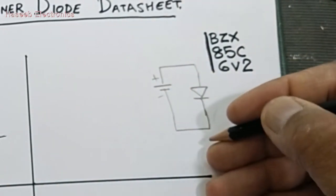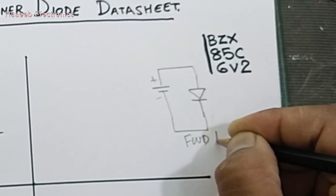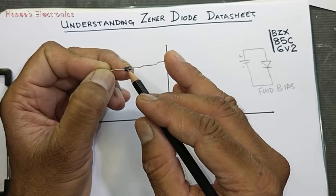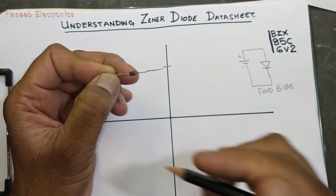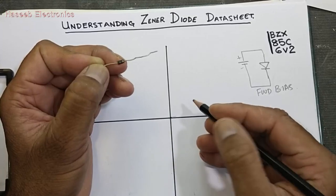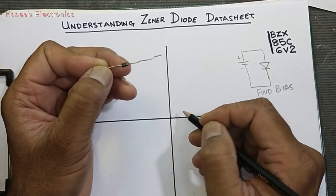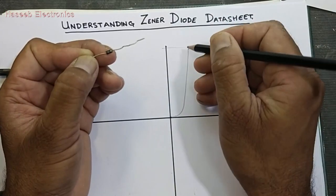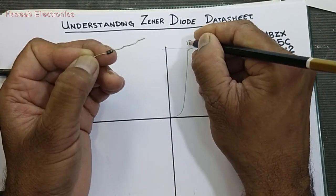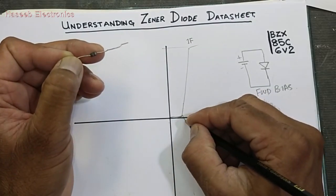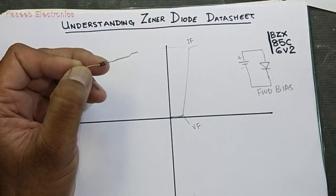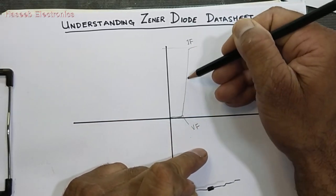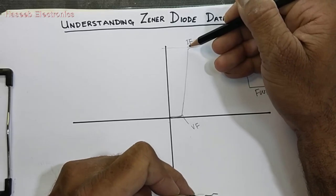In forward bias — anode positive, cathode negative — after the forward junction voltage of 0.7 volts, this diode will allow current to flow. How much current? If it is 1 ampere rated, we can take a maximum of 1 ampere — that is called the forward current, If. Here is Vf, the forward voltage, and from that forward voltage we take the maximum current, which is the forward current.